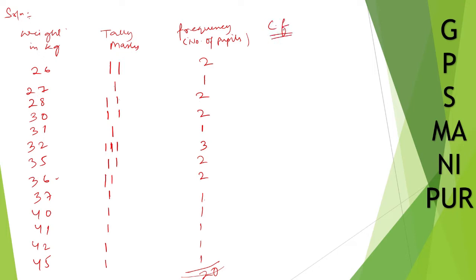Let me represent it by CF cumulative frequency. How are you going to find? Write down the first number 2. Next number will be 2 plus 1, it will be 3. Then 5, 7, 8, 11, 13, 15, 16, 17, 18, 19, 20. So this is cumulative frequency.